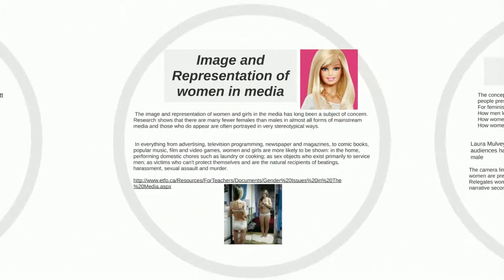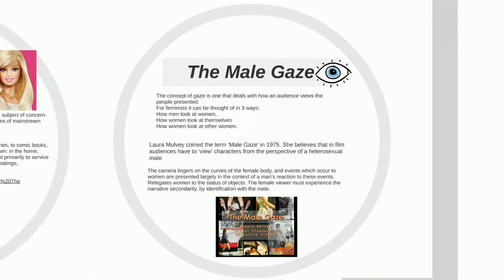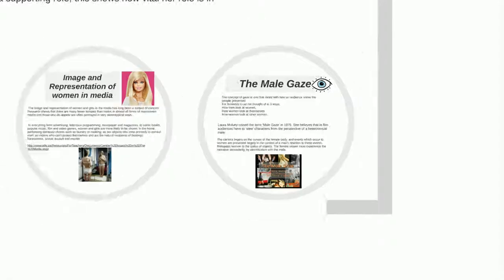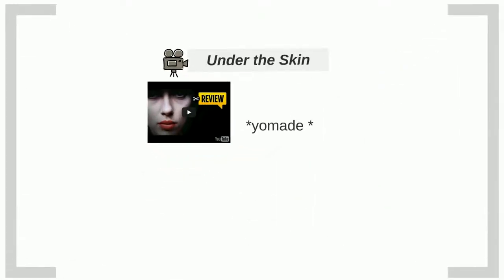So these two are fine: image and representation of women in the media, the male gaze. And then you should have Cassie's quotation after that, because that's where you're talking about representation of women, and it should follow on from that.